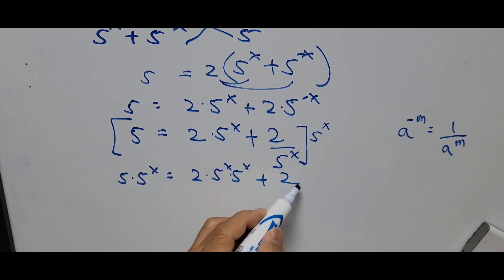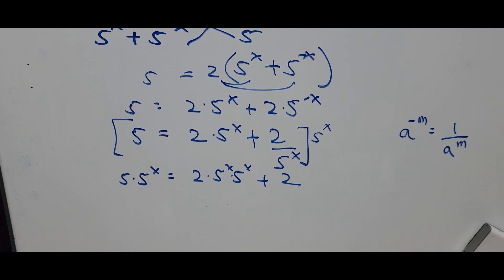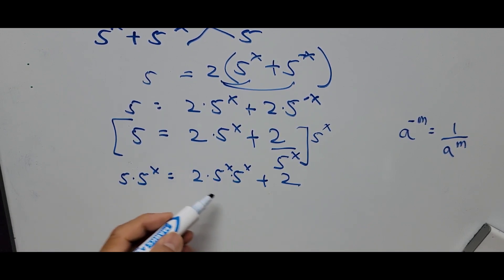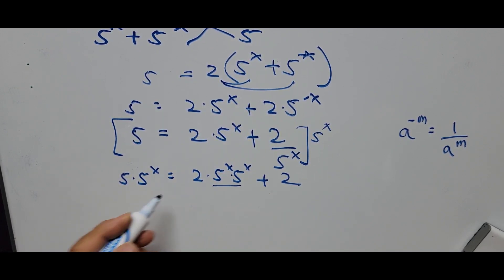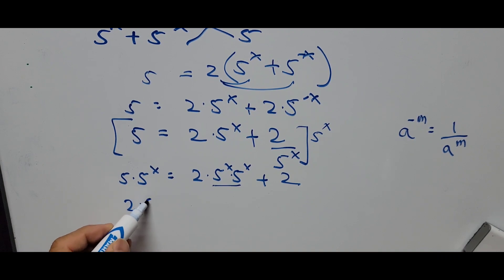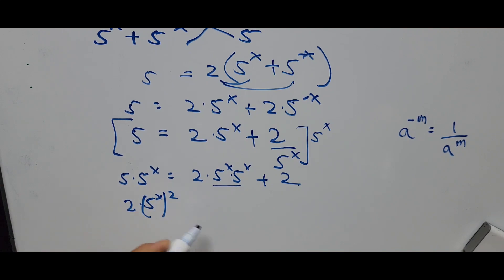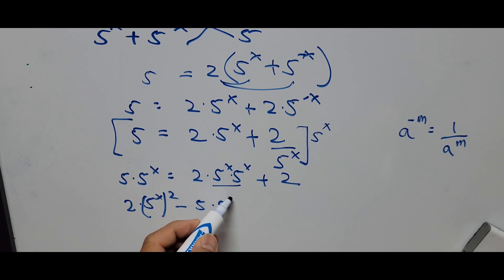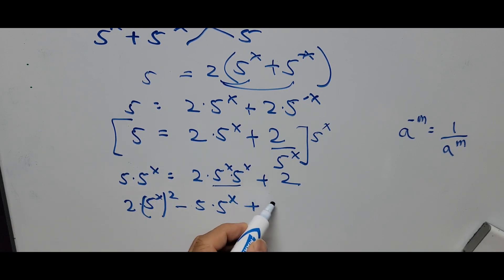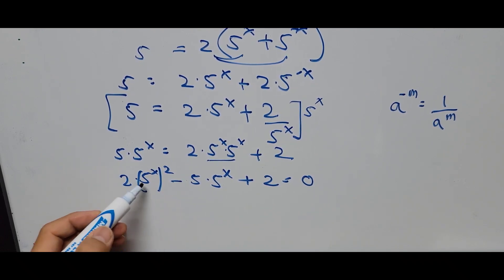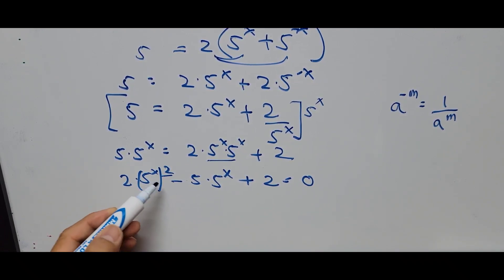Simplifying the equation further, we move all terms to one side. This simplifies to 2 times 5 to the power x squared — since we're multiplying it by itself — minus 5 times 5 to the power x plus 2 equals 0. If you notice, this has now turned into a quadratic equation since we have an exponent of 2.